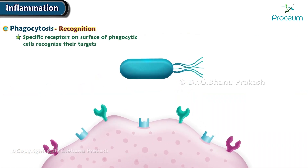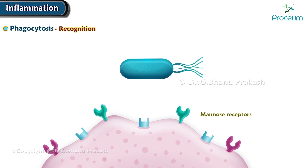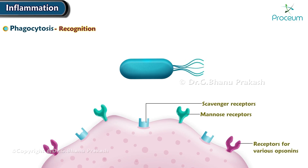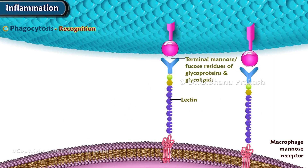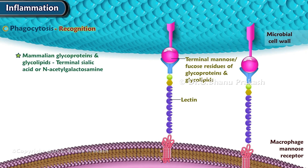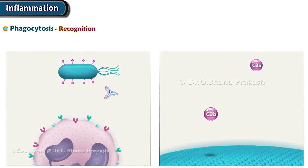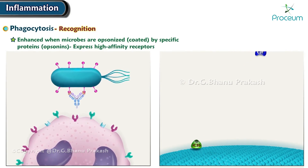Phagocytosis is initiated when specific receptors on the surface of phagocytic cells recognize their targets. The macrophage mannose receptor is a lectin that binds terminal mannose and fucose residues of glycoproteins and glycolipids. These sugars are found on microbial cell walls, whereas mammalian glycoproteins and glycolipids contain terminal sialic acid or N-acetylgalactosamine. Due to this fact, the mannose receptor recognizes microbes and not the host cells.